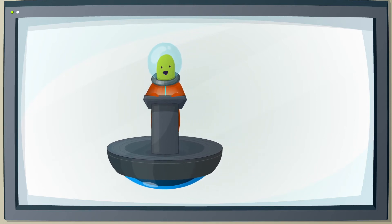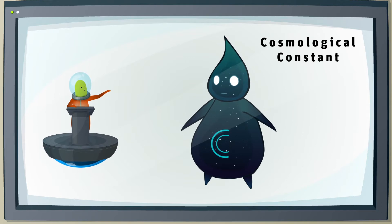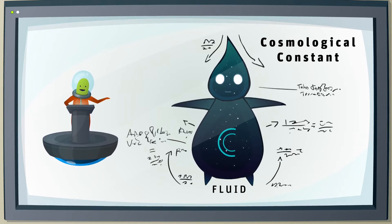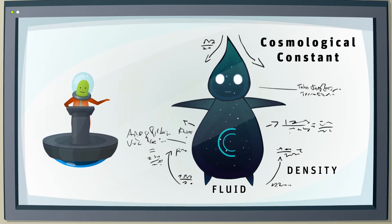Scientists think this is due to a modification of Einstein's theory by a new number, the cosmological constant. It corresponds to the density of a strange type of substance, a fluid that permeates the universe. This substance behaves a bit like a gas, in the sense that it has a density and a pressure.